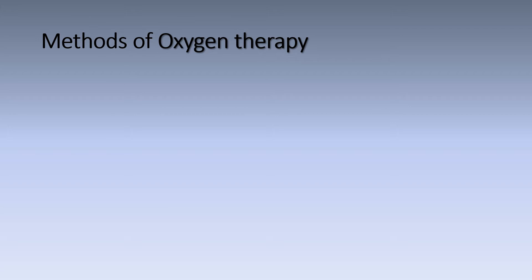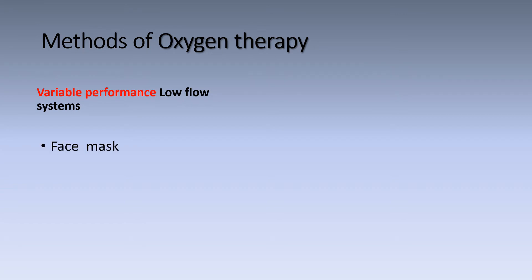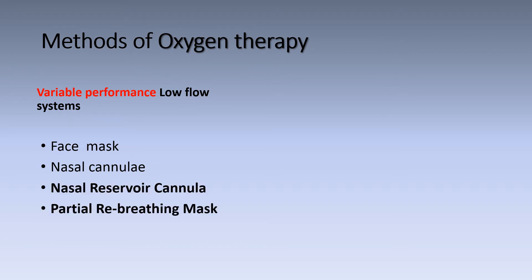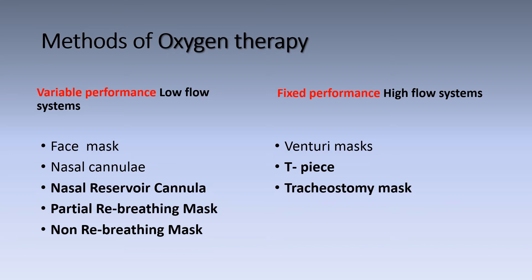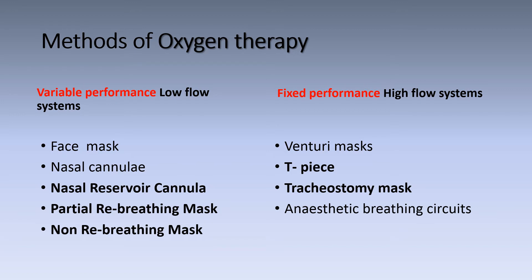Methods of oxygen therapy. There are two main methods: variable performance, which is the low flow system — for example, face mask, nasal cannula, nasal reservoir cannula, partial rebreathing mask, and non-rebreathing mask — and fixed performance, which is the high flow system — for example, the venturi mask, T-piece, and tracheostomy mask. Also included are anesthesia breathing circuit and high flow nasal cannula.